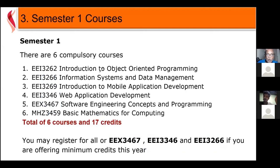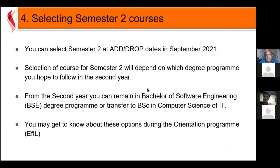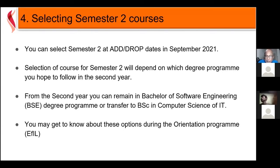These are the semester one courses for the BSE program. Semester two subjects will be decided in September. One characteristic of the program is that after level three — the first year — is complete, you have a choice: you can do a B.Sc in Computer Science or B.Sc in IT instead of Bachelor of Software Engineering. You will have that option when you complete the first year.